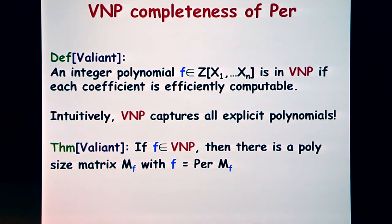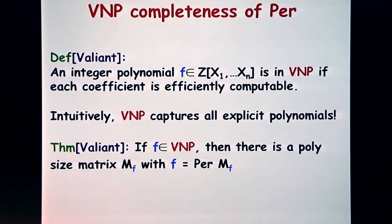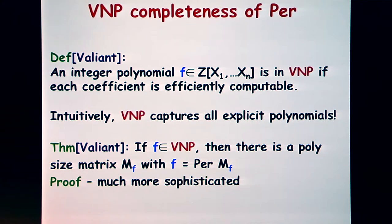What Valiant showed is that the permanent captures all polynomials in VNP. If you take any polynomial F in this class, there is a polynomial-size matrix with variables and constants whose permanent computes that polynomial. VNP is a much, much richer class. The proof is one of the most sophisticated completeness reductions we know. The summary: the permanent has extremely rich expressiveness and captures any reasonable polynomial you would define.